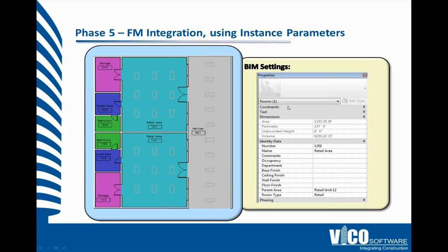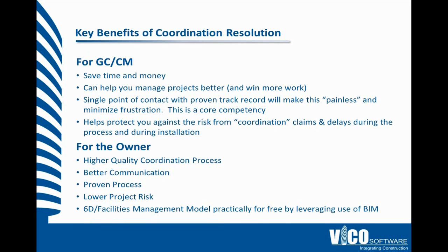This is what the instance parameters look like — here are some different space types. You've got your storage spaces, your bathroom spaces, retail areas. If you want to shut down a retail area, we can instantly tell you what equipment's in there, what services are feeding that, and what implications shutting that down may have.